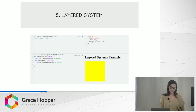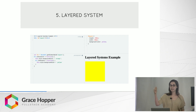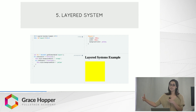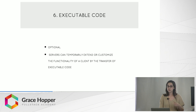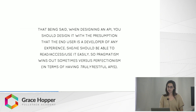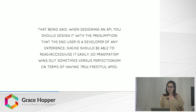Fifth, layered system. The idea is that components we integrate into our app should do one thing and do it well. Also, your client shouldn't be able to tell if it's talking to the end server or to an intermediary — each component should only know what the next layer is. Sixth, executable code — the only optional constraint. Servers can temporarily extend or customize the functionality of a client by the transfer of executable code, usually in a script tag in your HTML. When designing an API, you should design it with the presumption that the end user is a developer, and she or he should be able to read, access, and use it easily.